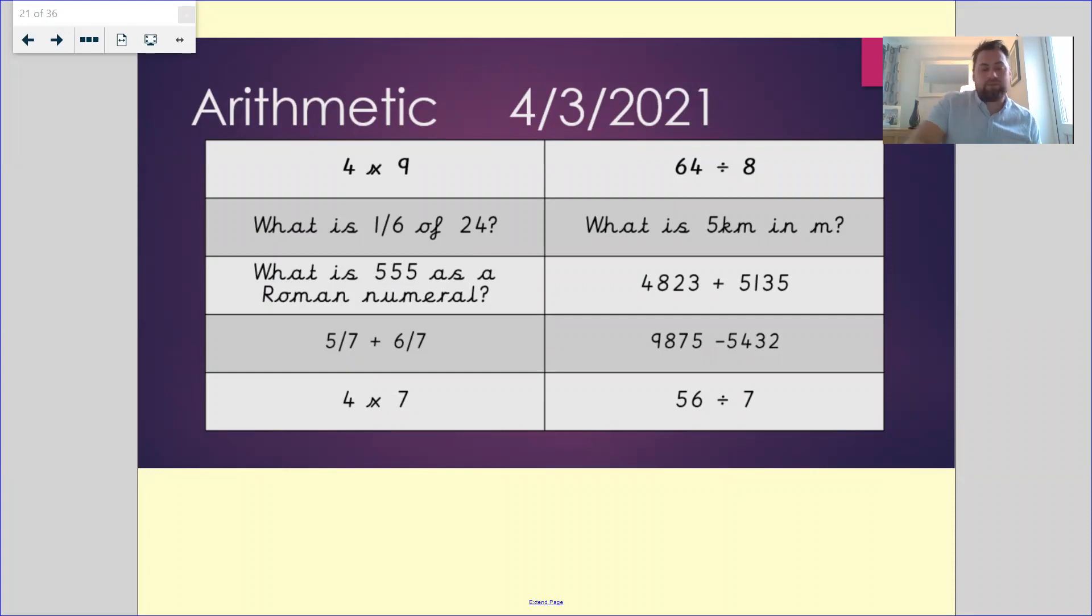Question five, four times seven is 28. We then have 64 divided by eight, which is also eight.